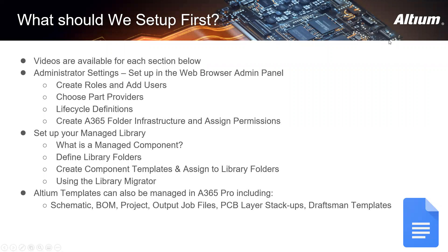The first thing that you should set up is your administrator settings, and this can be set up in a web browser admin panel. Within the web browser admin panel, you can create roles — which is another word for groups — and add users to those groups. You can then choose your company part providers and create lifecycle definitions and assign those to different items within the 365 server.